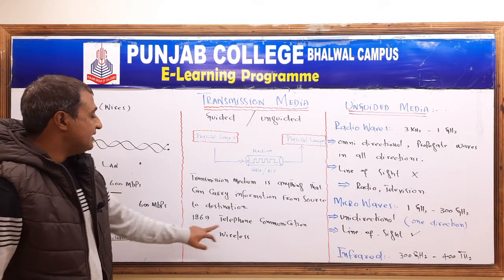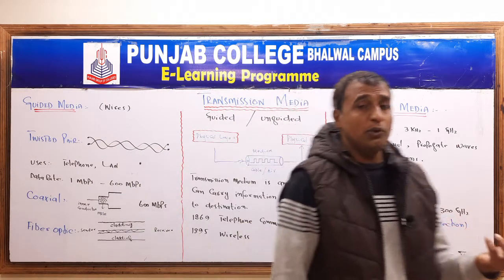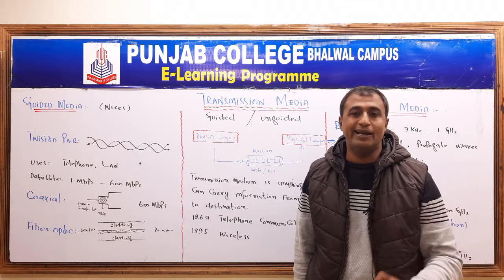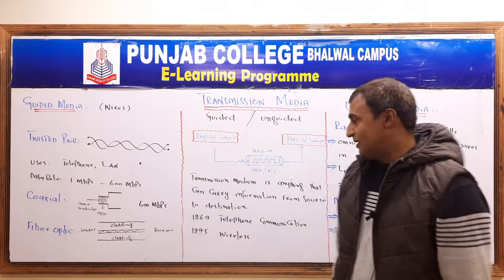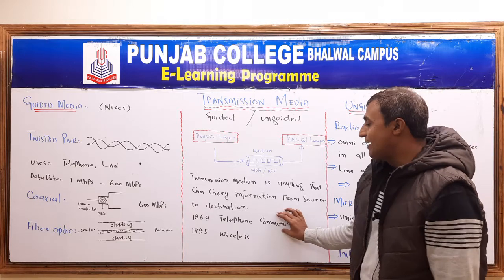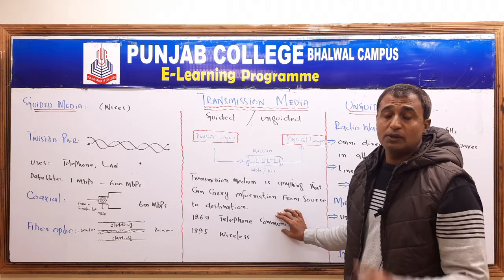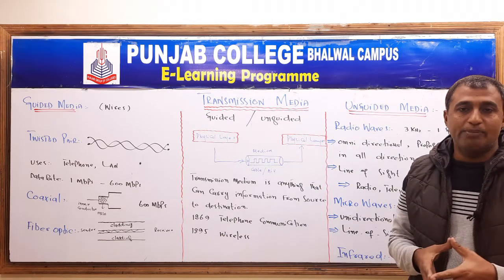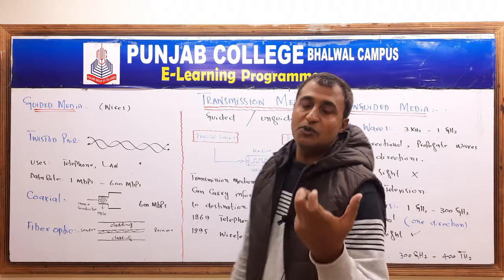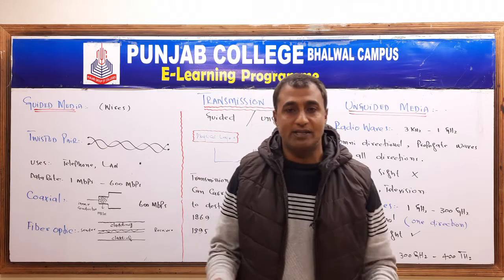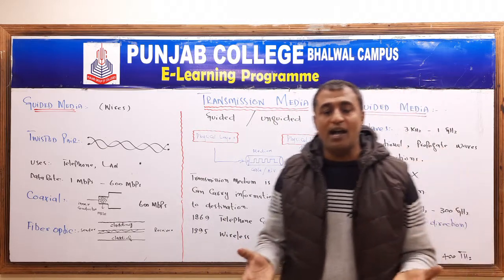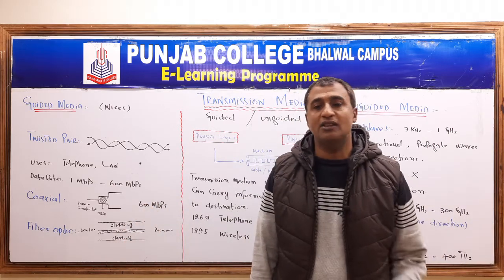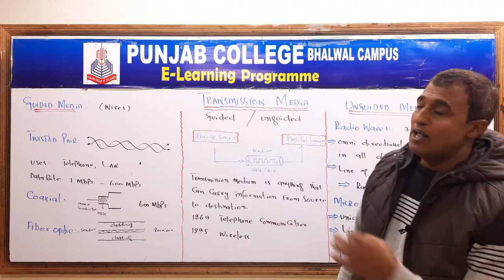Transmission medium is anything that can carry information from source to destination. In 1869, telephone was invented and telephone communication started, and at that time the transmission medium was wire, because at that time there was no concept of wireless. In 1895, the concept of wireless came — that we can send our data and information from sender to receiver with the help of signals as well. So, transmission medium is the path through which our data travels from source to destination — that is called transmission medium or transmission media.